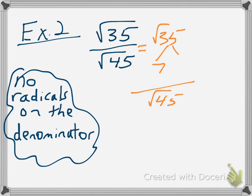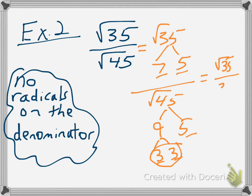So I get 7 and 5 here and there are no common factors with 35, but 45 I have 9 and 5. There's a perfect square. I have my 3's so 3 breaks out. So really this turns into √35 over 3√5.